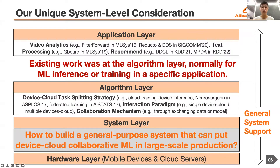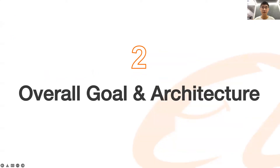Existing work on device cloud collaborative machine learning tends to focus on algorithm design and normally for a specific application. However, practical industrial scenarios tend to involve the full cycle of diverse machine learning applications to serve billions of mobile users. Thus, building a general-purpose system that can put device cloud collaborative machine learning in large-scale production becomes an urgent need. In this work, we design and build such a system called Wally.